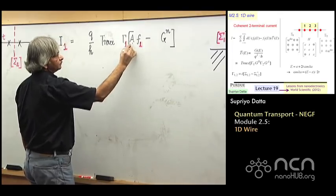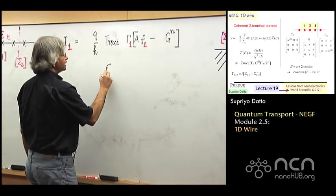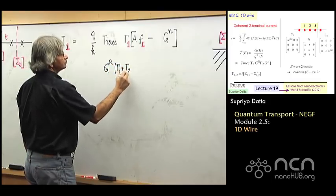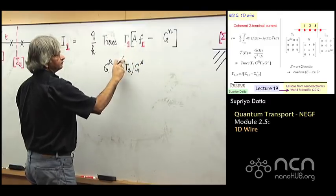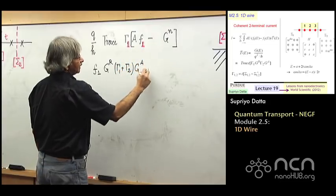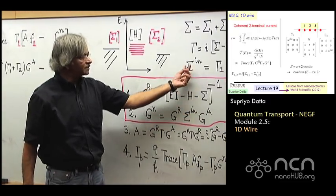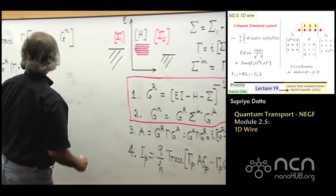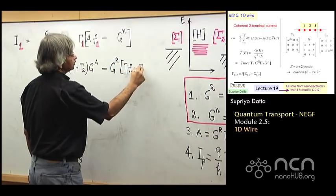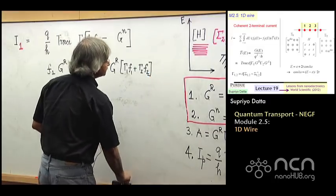So let's say we have this two-terminal device and we want the current in contact one. What I want to do is play around with this term within the parenthesis a little bit to simplify it. Look at that first term - since gamma 1 is involved in both, I could pull it out of this whole thing. So take the gamma 1 out and come back to that. Here you have A, and A, as you may recall, we had this expression for A: GR gamma GA. I can use that. So I could write A as GR, and gamma is the sum of gamma 1 plus gamma 2, and then GA. That's the A. And this is then multiplied by that number F1.